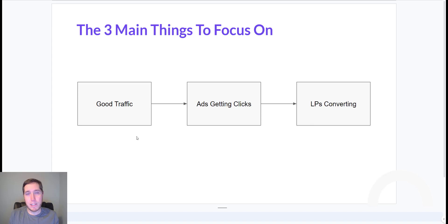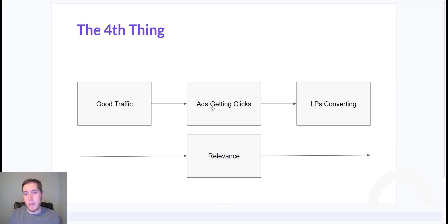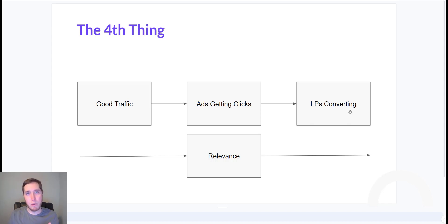Next, we need our ads to get clicked at a high enough rate. And once those people click on our ads, we need to send them to a landing page that actually converts them into a lead. On top of that, there's a fourth underlying thing: relevance. If somebody types in 'mobile auto detailing Dallas, Texas,' you show them an ad that says 'we do mobile auto detailing in Dallas, Texas,' and then send them to a landing page saying the same thing — that relevance needs to happen at every step of the process and in every ad group.